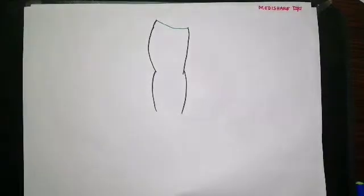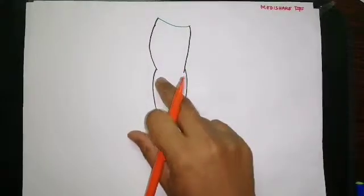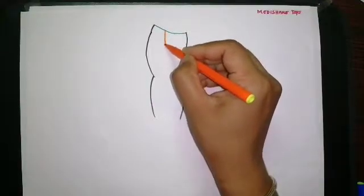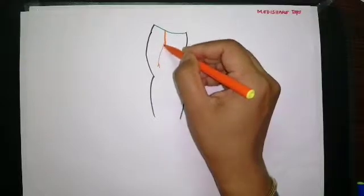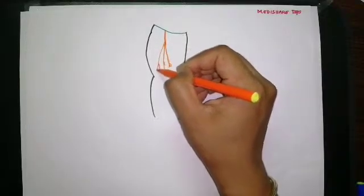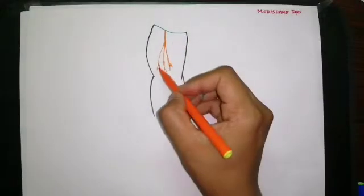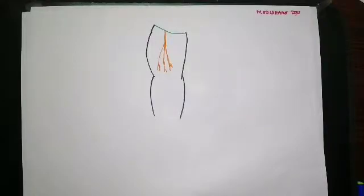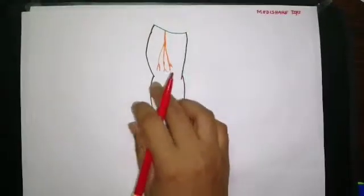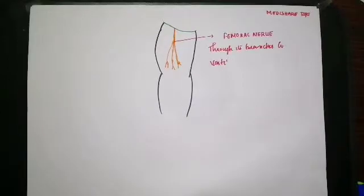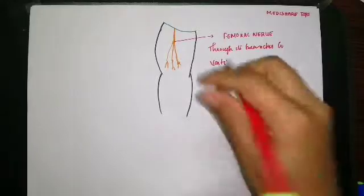Starting with the anterior compartment of the thigh, the nerve is the femoral nerve. The femoral nerve supplies the knee joint through its branches to the vastus muscles — it gives out branches to the vastus lateralis, vastus intermedius, and vastus medialis. Through these branches of the femoral nerve to the vastus muscles, it also supplies the knee joint. Especially the nerve to the vastus medialis is supplying the knee joint.